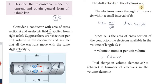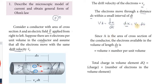The electrons move through a distance dx within a small time interval dt. Velocity is displacement by time, so vd equals dx by dt, which gives dx equals vd into dt. That is, displacement equals drift velocity into time.